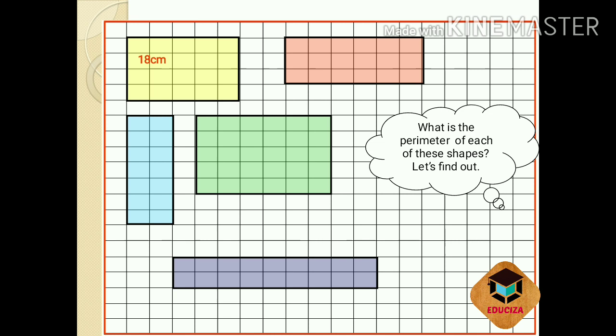Did you understand it properly? Now it's your turn to find out the perimeter of all these shapes. The second shape is also 18 centimeter — the shape of this rectangle is different from the yellow one, but if you find the length of each side you will get the answer easily. The blue colored rectangle is also 18 centimeter. The green color is 22 centimeter, and the last rectangle is 26 centimeter.